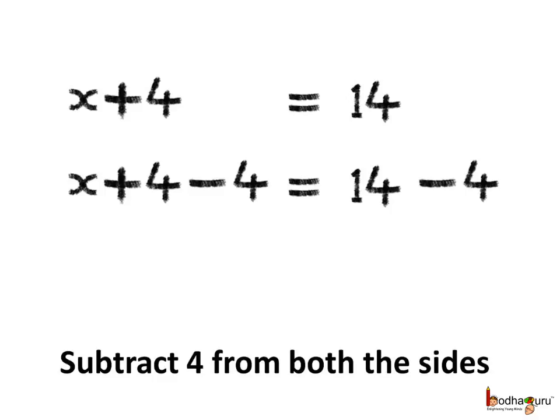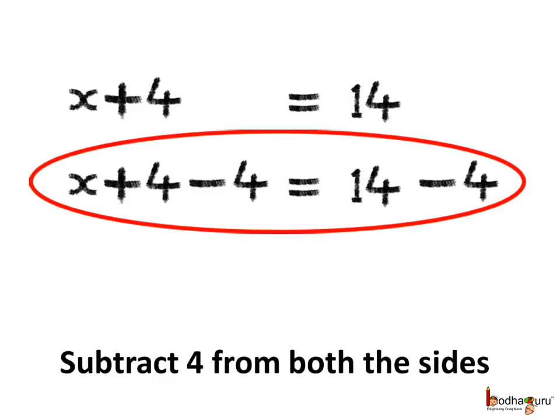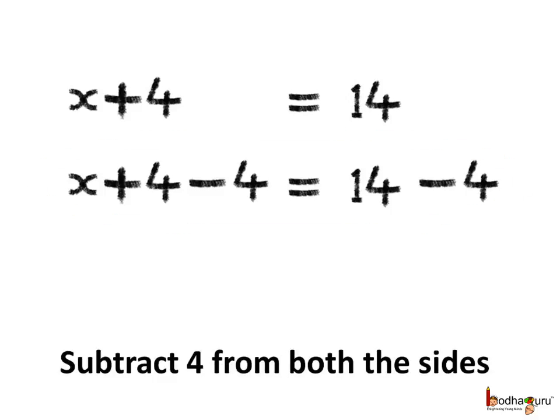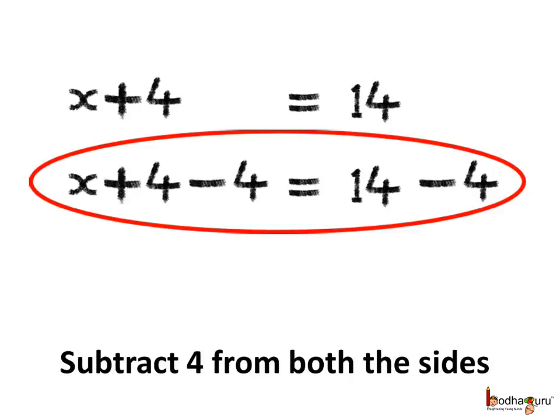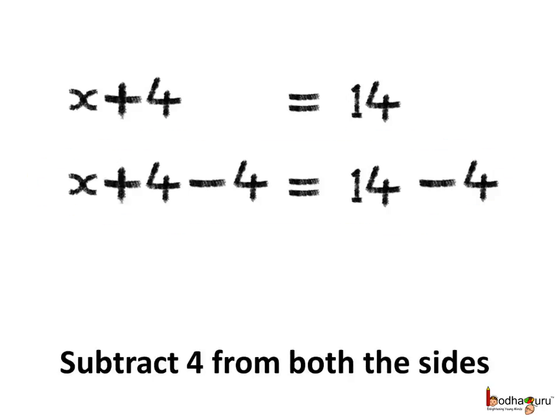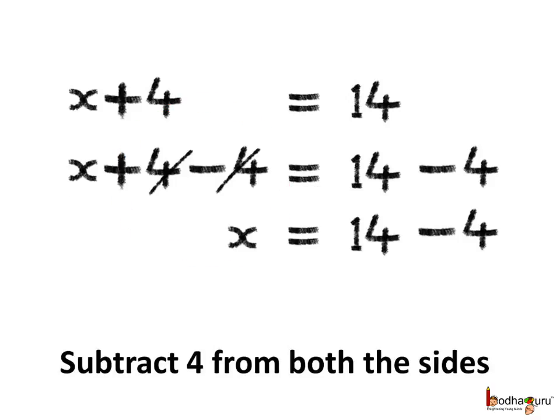So we subtract minus 4 from both the sides. And hence the equation becomes x plus 4 minus 4 is equal to 14 minus 4. On the left hand side 4 minus 4 is 0. So they cancel out each other.